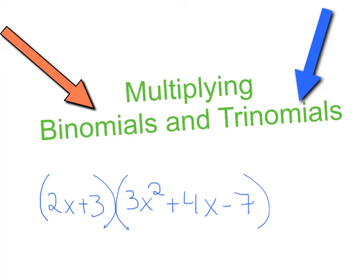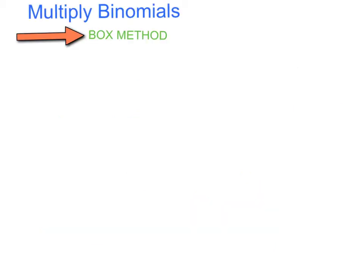In today's lesson we will be multiplying binomials and trinomials. In the last lesson we distributed monomials, but now here's an example of a question you might see in today's lesson where we will multiply a binomial by a trinomial. For the different types of questions I'm going to show you two different methods to get the answer, and you get to choose which method you prefer: box method or FOIL method.